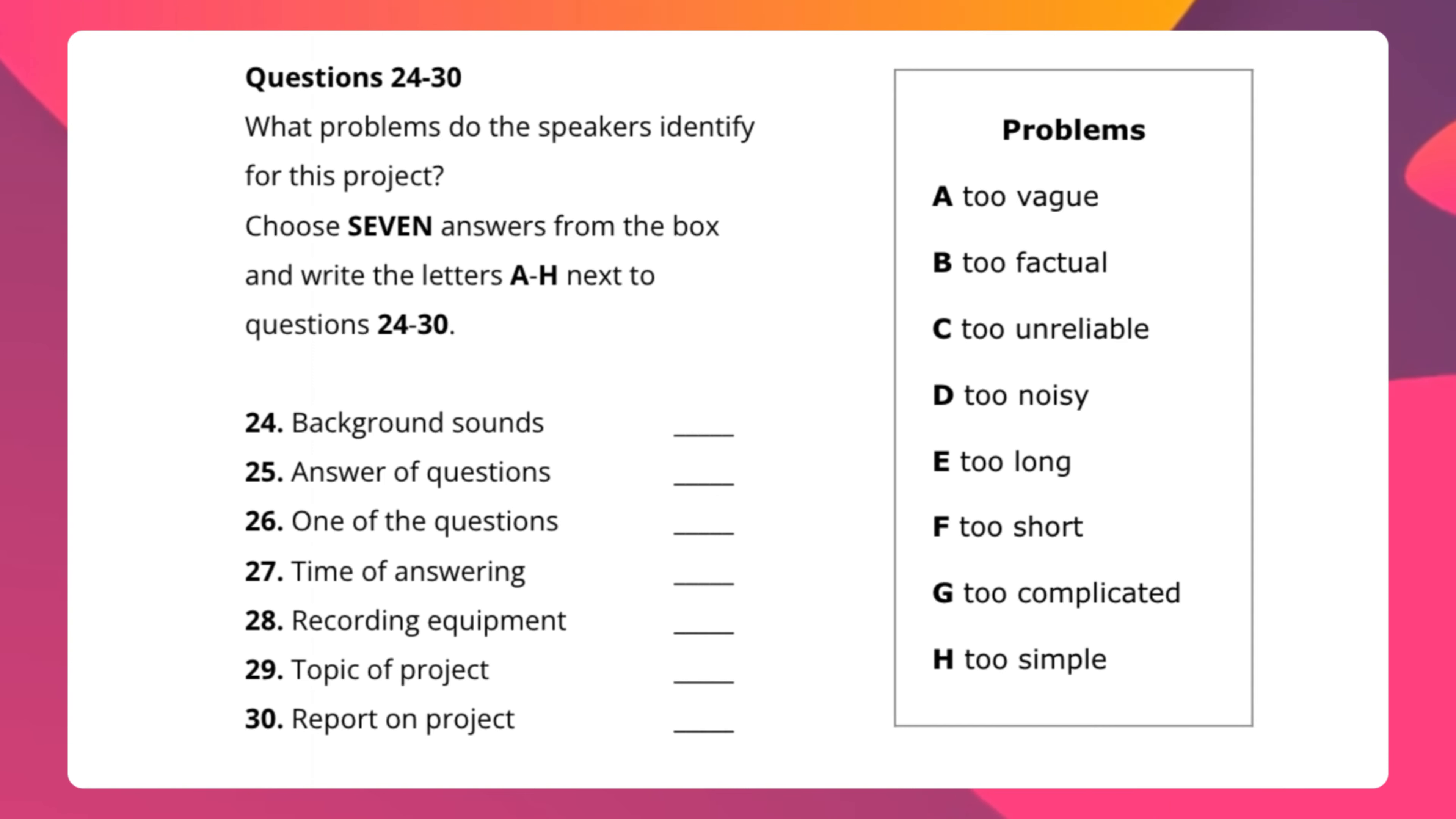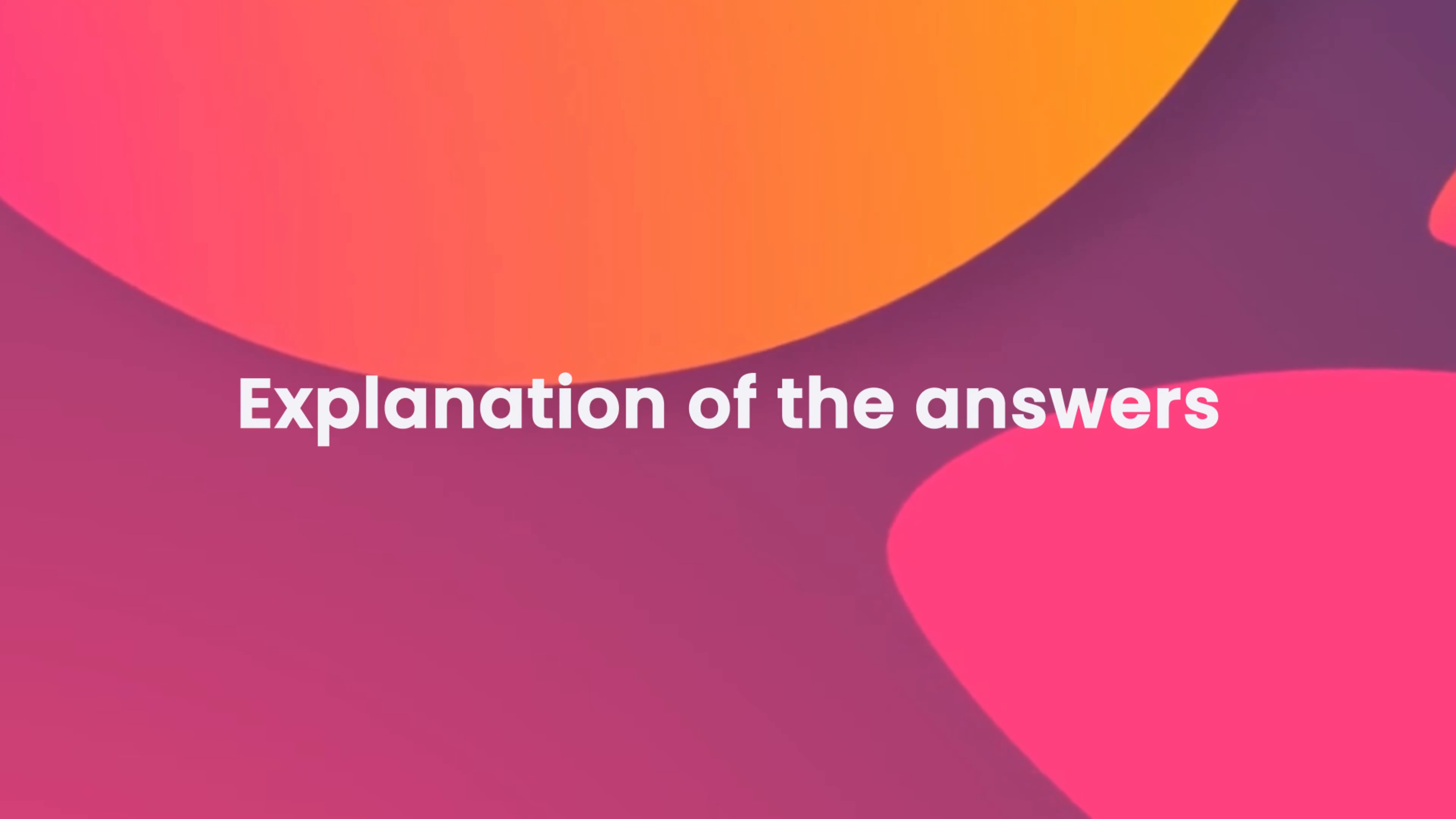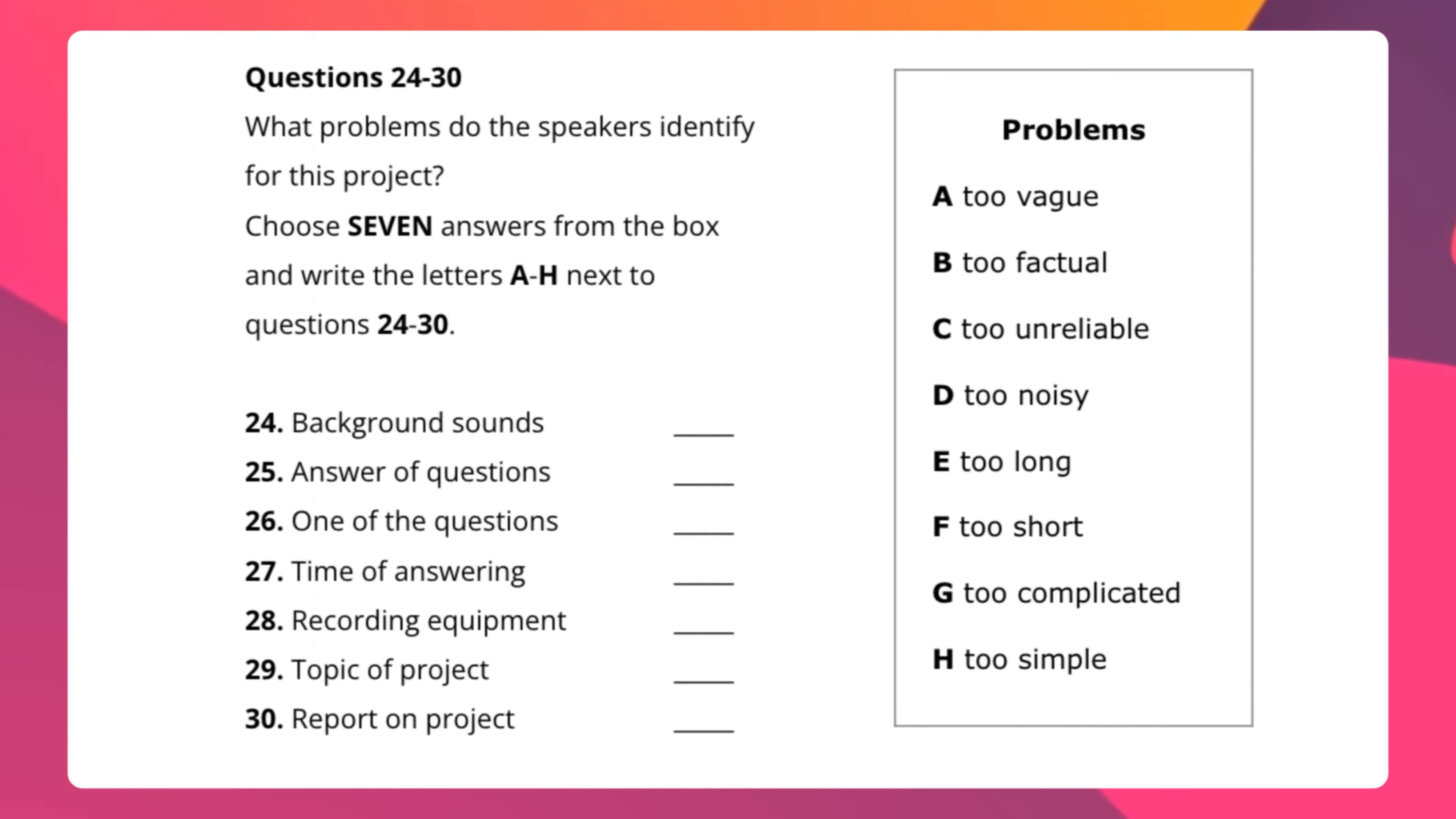So when they actually talked about background sounds they said that the answer is going to be too noisy, that is they can actually experience a lot of background sound which can be very much noisy or which can be very loud and that is why the answer is D, too noisy. They definitely must not have said too noisy, they must have used different synonyms in context to noisy.